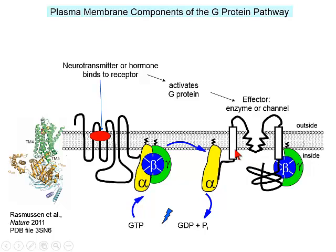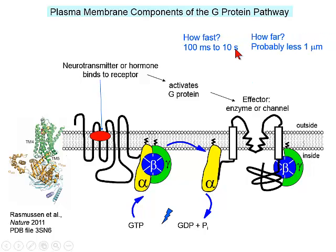The effector of the G-protein is either an enzyme or a channel. The G-protein activates the effector — sometimes via the alpha subunit, sometimes via the beta-gamma subunits, which are usually seen together. This pathway typically operates on the order of 100 milliseconds to 10 seconds — rather slower than the ligand-gated channel family. The components of the G-protein pathway are typically less than a micron apart.